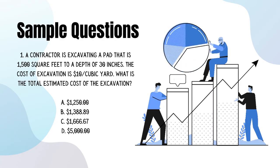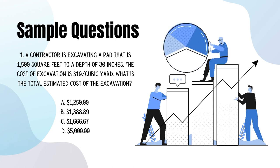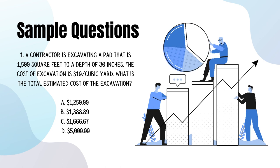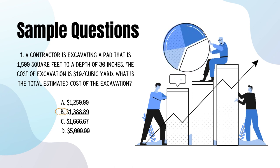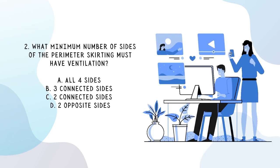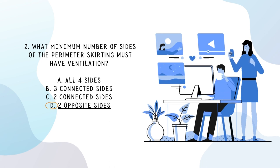Let's take a look at some sample questions you might encounter on the exam. A contractor is excavating a pad that is 1,500 square feet to a depth of 30 inches. The cost of excavation is $10 per cubic yard. What is the total estimated cost of the excavation? The answer is B: $1,388.89. What minimum number of sides of the perimeter skirting must have ventilation? The answer is D: two opposite sides.